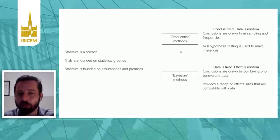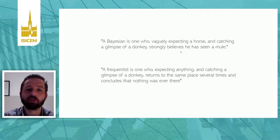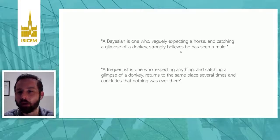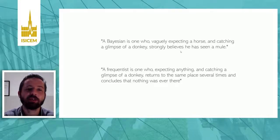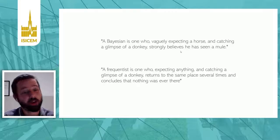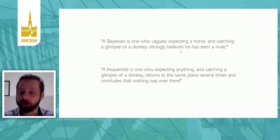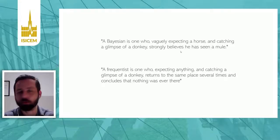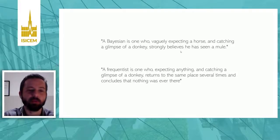The results will mostly converge in most scenarios. There's a funny joke that a Bayesian is one who, regularly expecting a horse and catching a donkey, strongly believes he has seen a mule. You can also say that a frequentist is one who, expecting anything and catching a donkey, returns to the same place several times to conclude that nothing was ever there. Both approaches are appropriate for running trials — there's no right and wrong here.